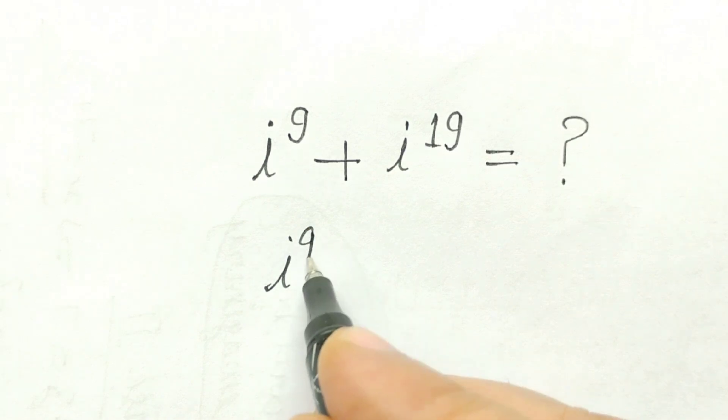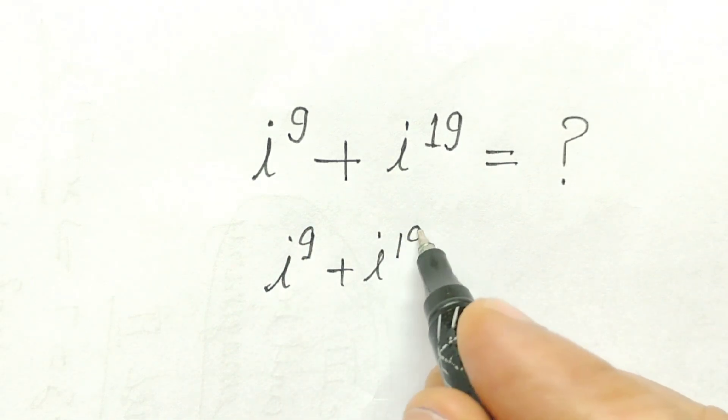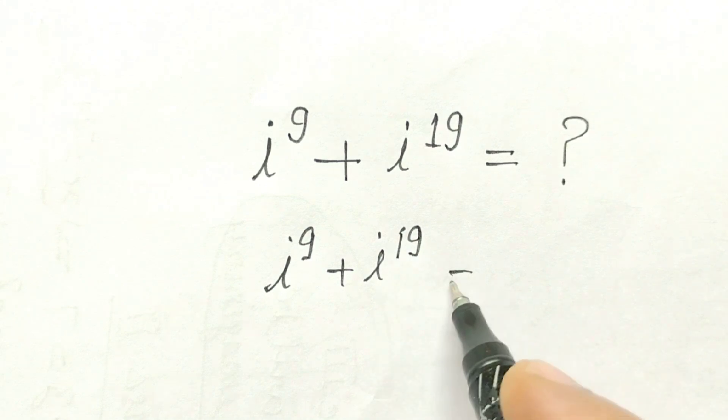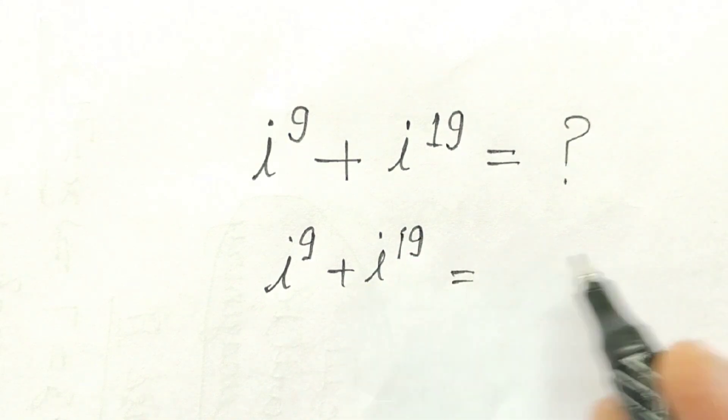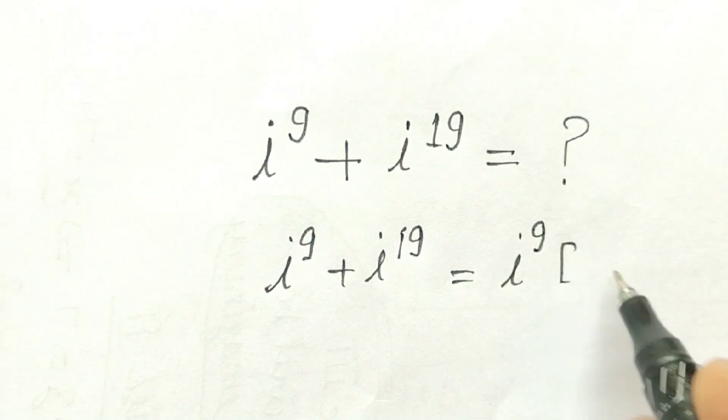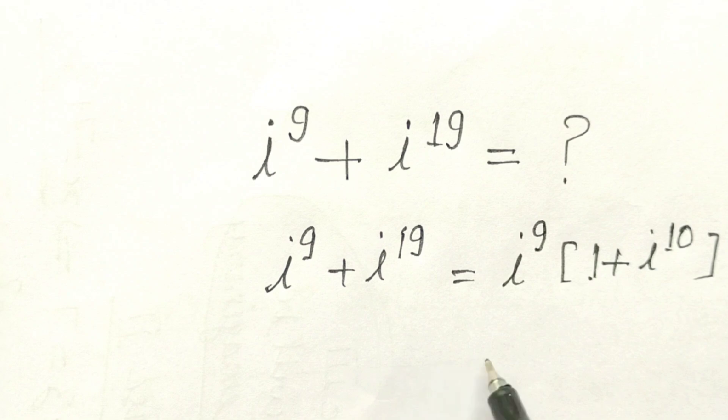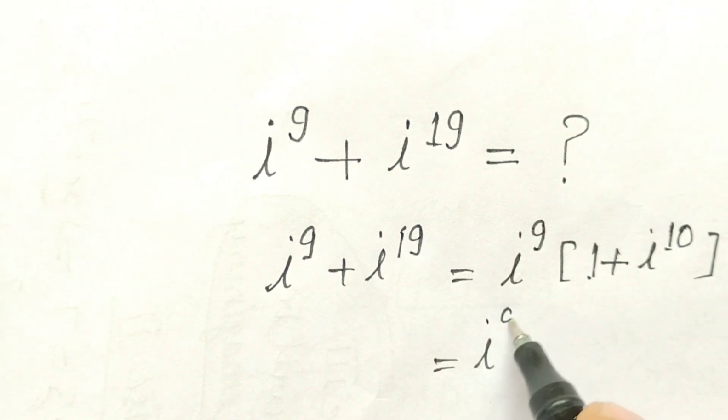So we have i^9 + i^19. If we take i^9 as common, we get i^9 times (1 + i^10).